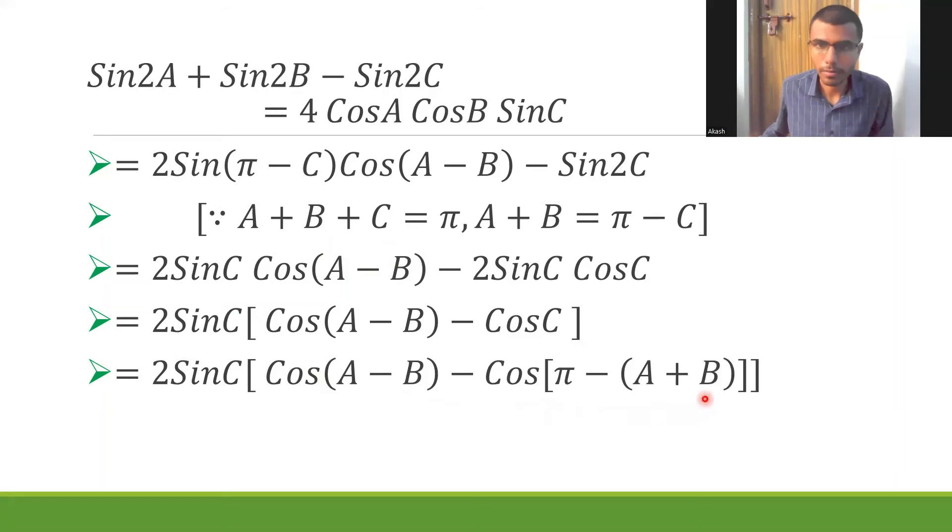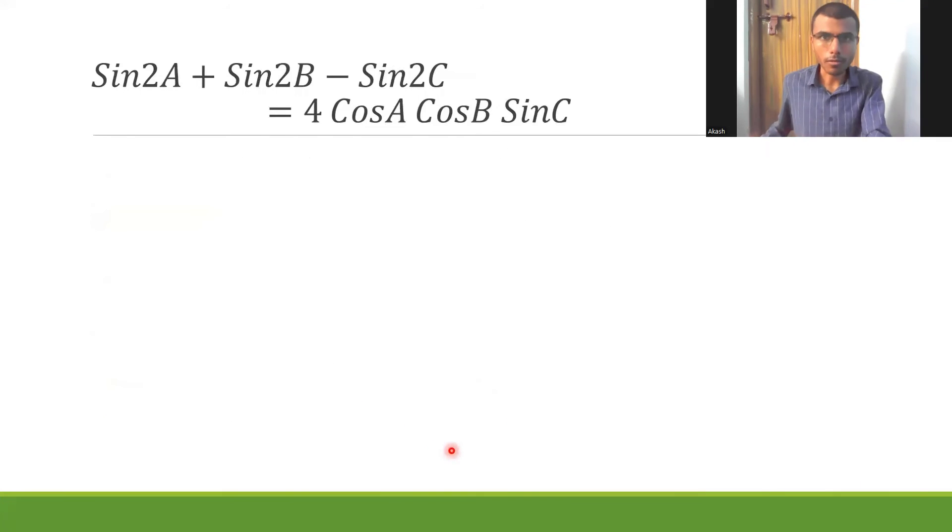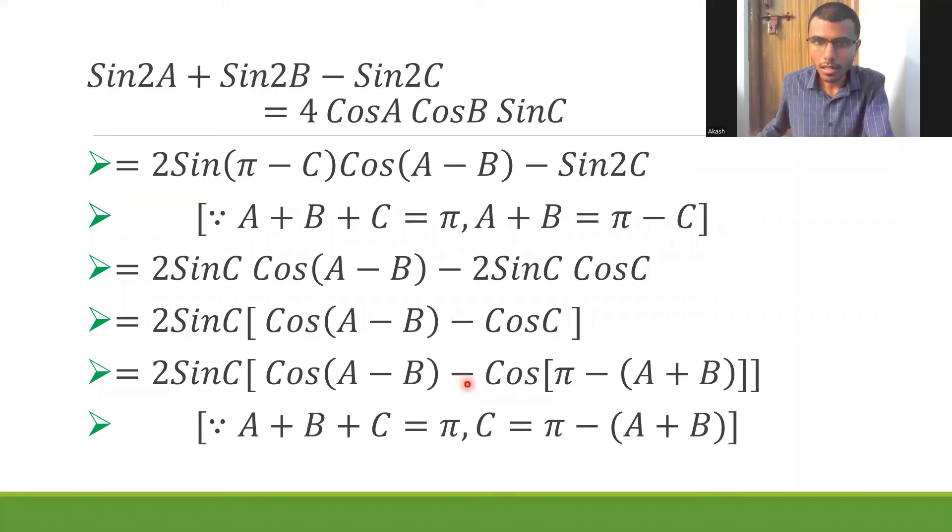Now what is cos (π minus θ)? It's minus cos θ. So here we have cos of π minus (A plus B), this would be nothing but minus cos (A plus B). Here already one minus is there, so minus into minus would be plus, and hence I'd get plus. Again, don't forget to mention the reason - that C is π, since A plus B plus C is π, C would be nothing but π minus (A plus B). It's always important whenever you come across such steps to mention the reason.